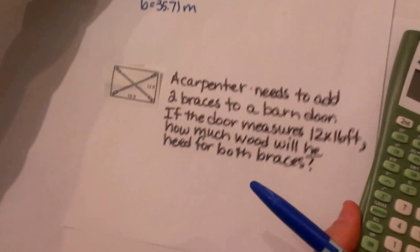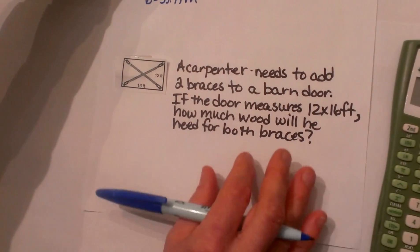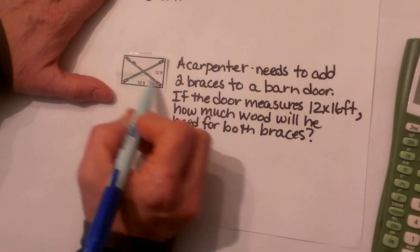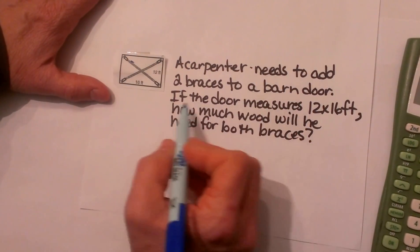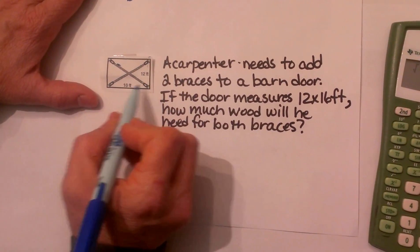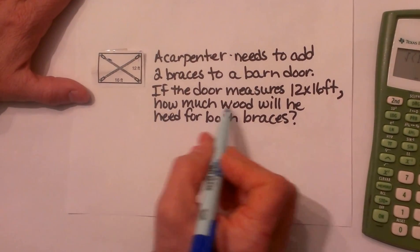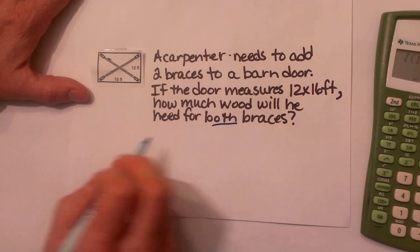That is our first problem. Let us look at our second problem. A carpenter needs to add two braces to a barn door. If the door measures 12 by 16, how much wood will he need for both braces?